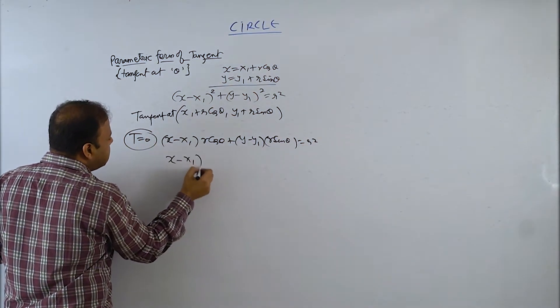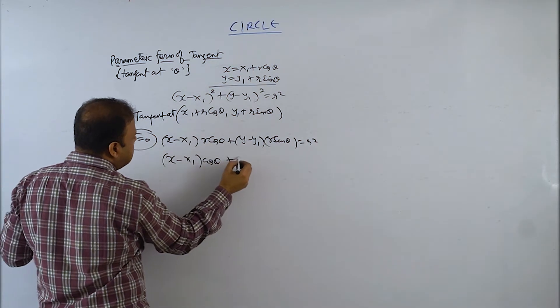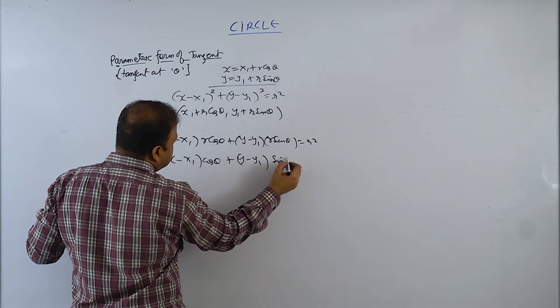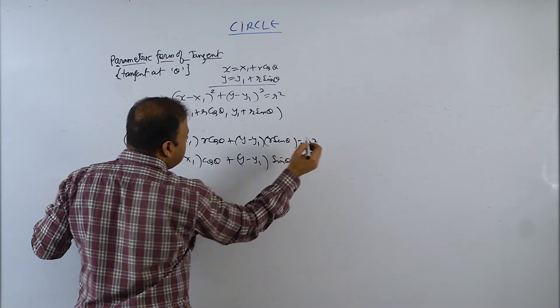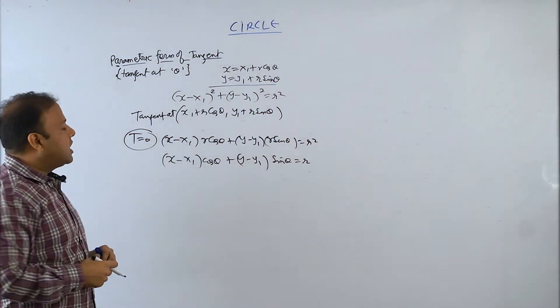I can say this is x minus x1 cos theta plus y minus y1 sin theta equals r. That is your parametric form of tangent.